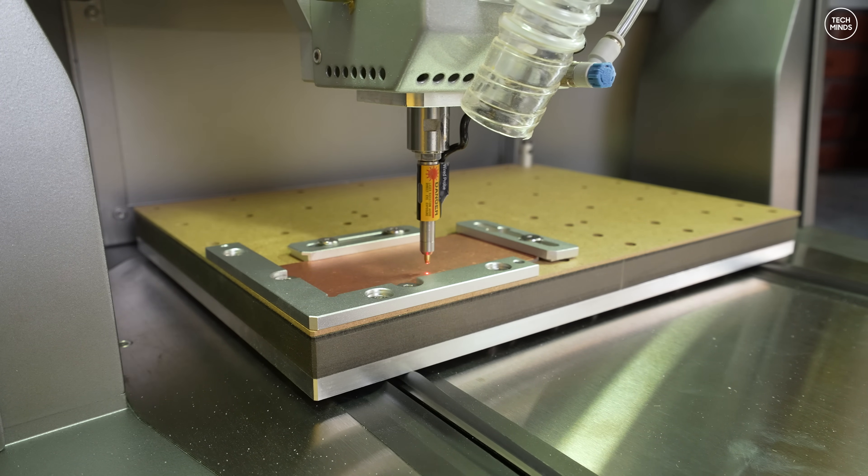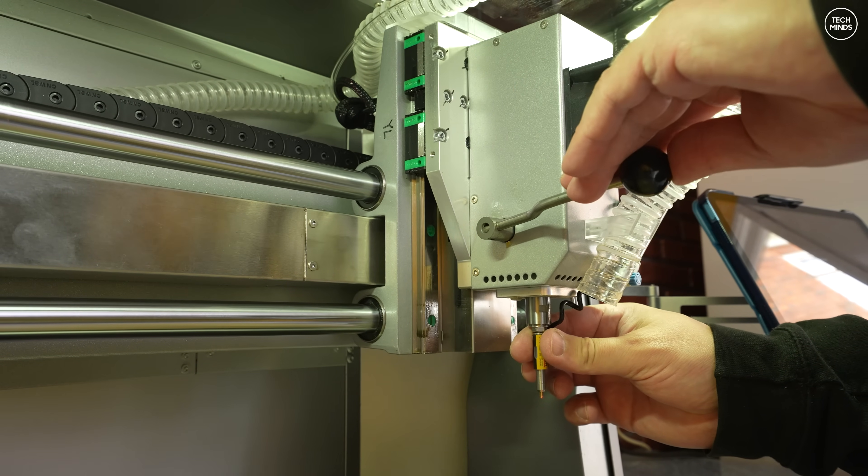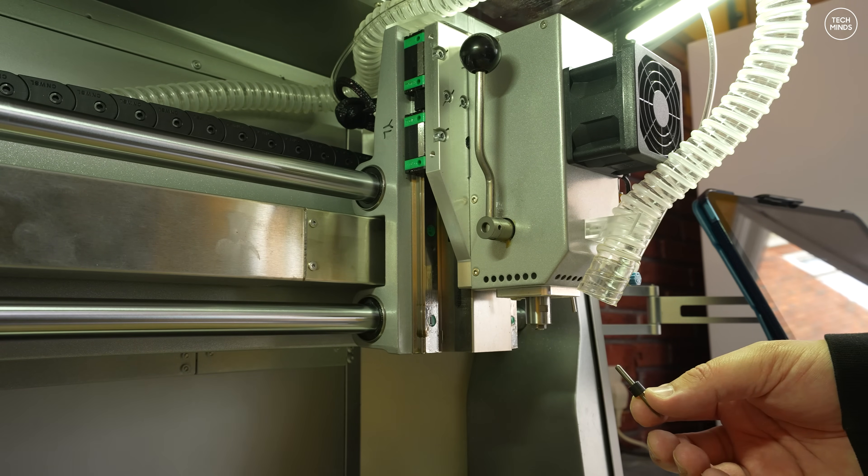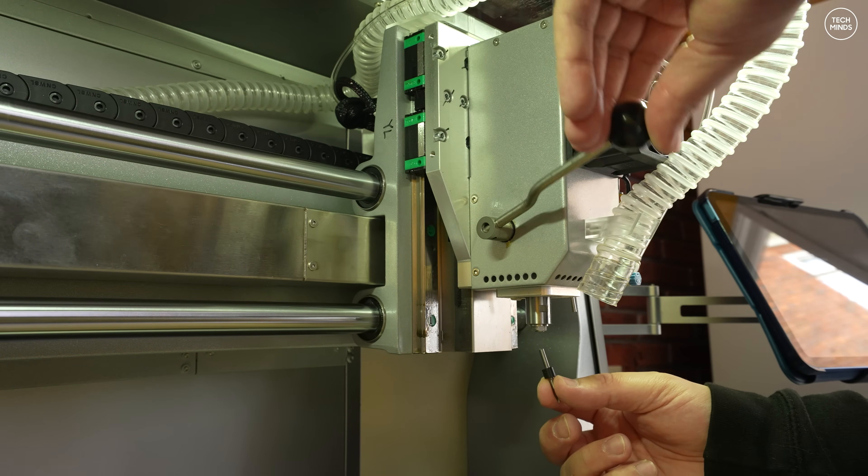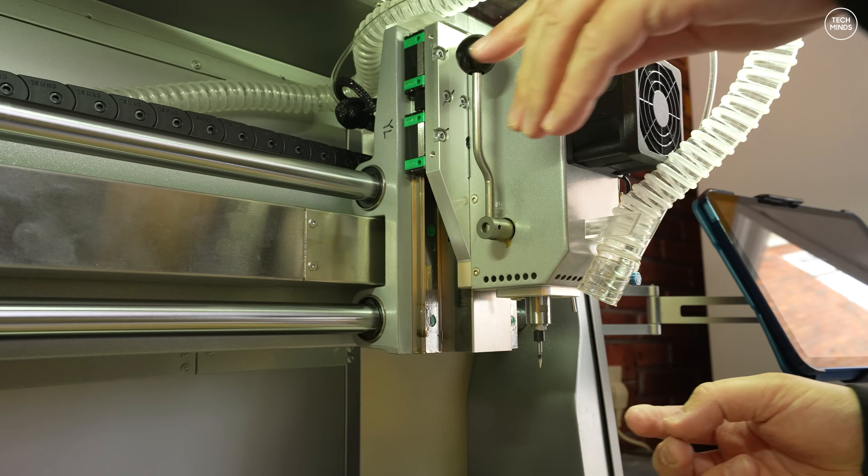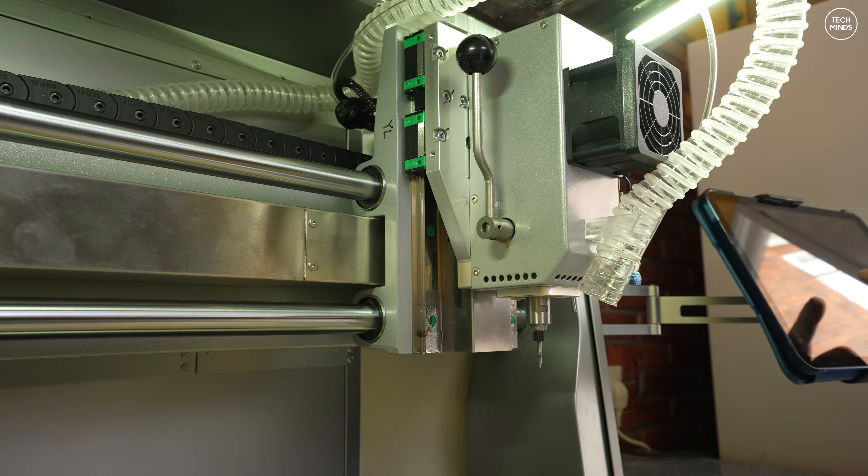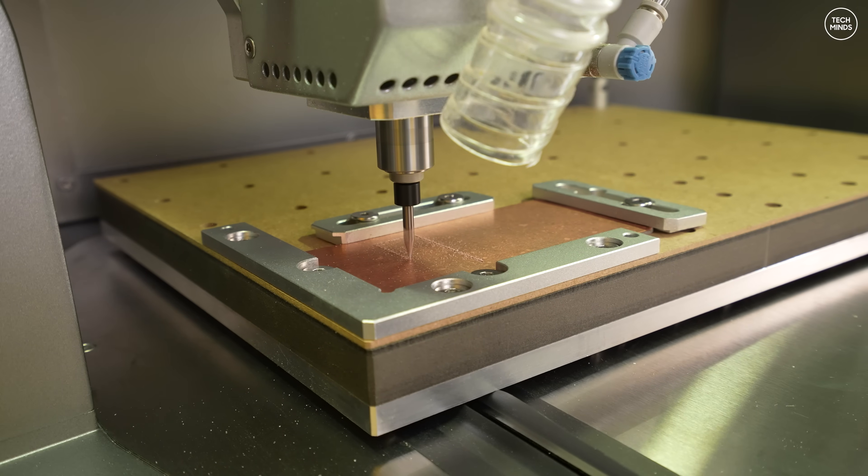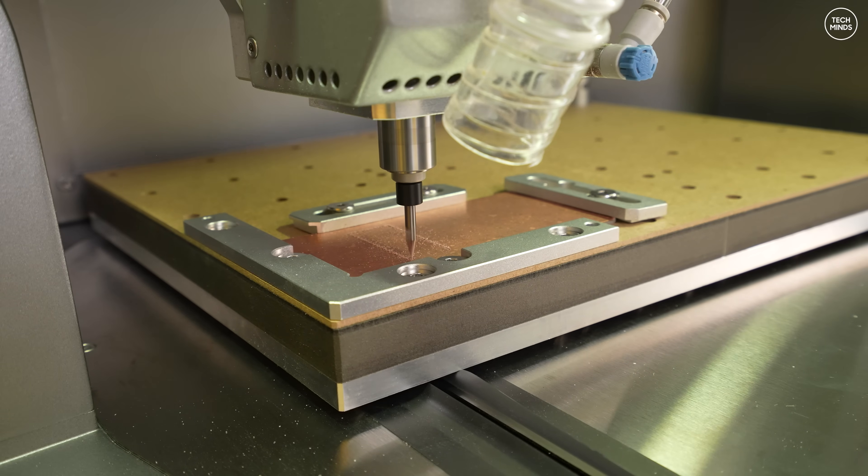Once that is complete, I'll now change that leveling probe out to the first bit that we need to do the job. This first bit will be used to cut the tracks on the PCB. For this I'm using a 0.2mm 30 degree metal engraving bit. We will use a different bit when it comes to drilling the holes for the N-type connectors.